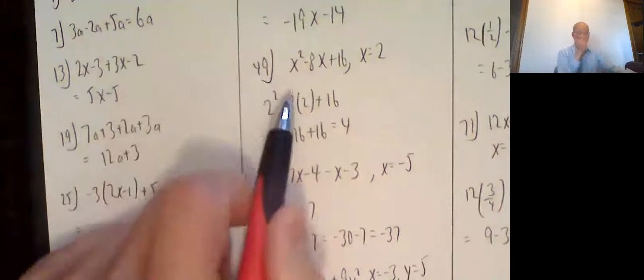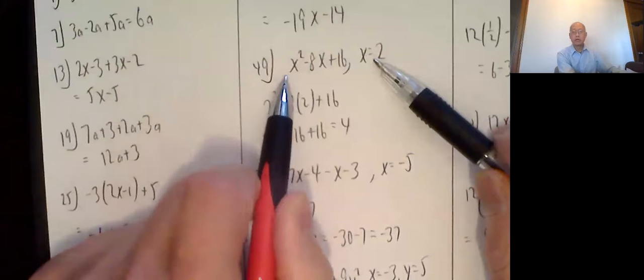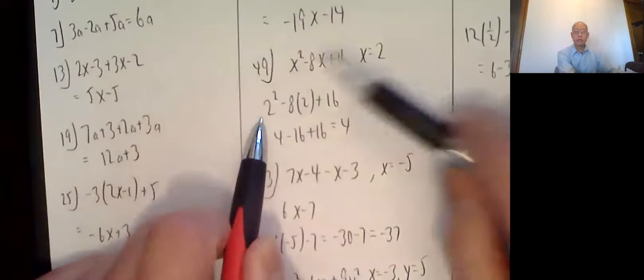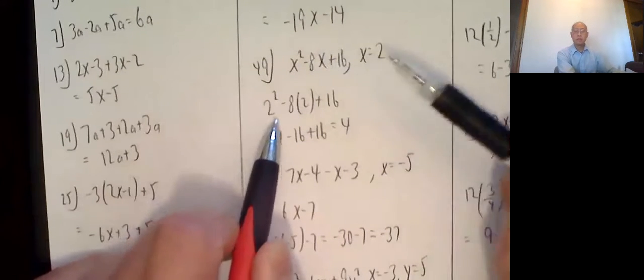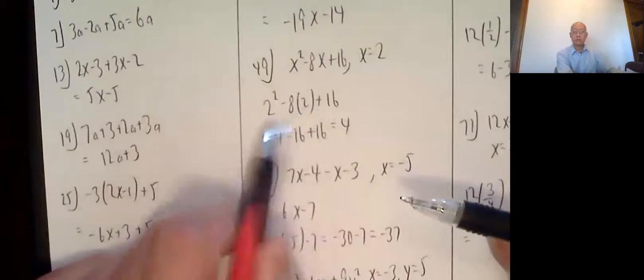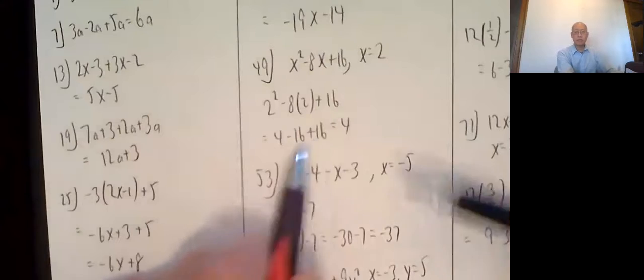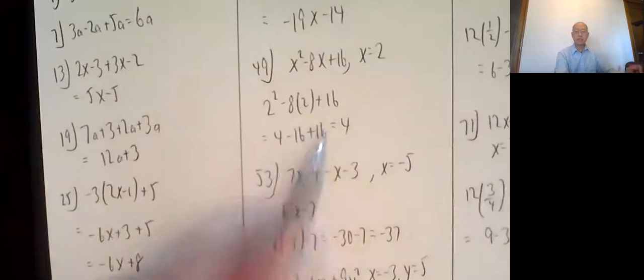In 49, they give me an expression. They just want me to plug in x equals 2. 2x squared minus 8x plus 16. So plug in a 2 here, 2 squared. Plug in a 2 here, negative 8 times 2. So that's 4 minus 16 plus 16. Well, minus 16 plus 16 cancels out, so we just have 4.